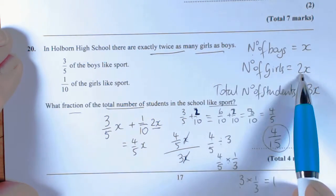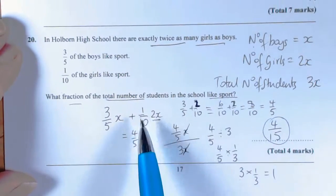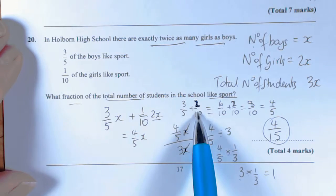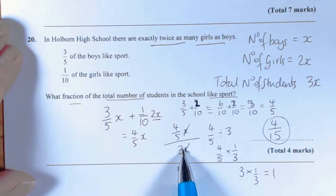Go through the fractions, being a little bit careful to make sure that you did actually do 1/10 times 2 to give you the 2/10 here, and then we worked out what fraction of the school like sport.